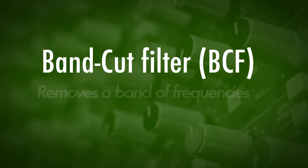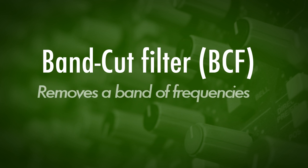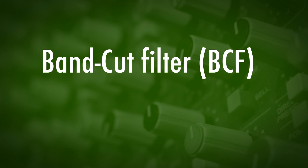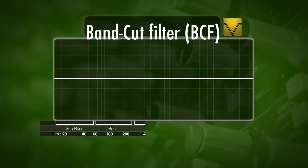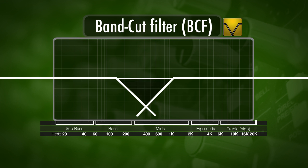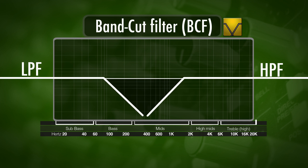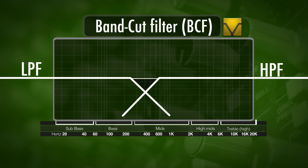Then we've got a band cut filter. This just removes a region or a band of frequencies. Let's say we've got a really annoying frequency around four or five hundred Hertz — with a band cut filter we can actually just remove that small portion of frequencies in that area.